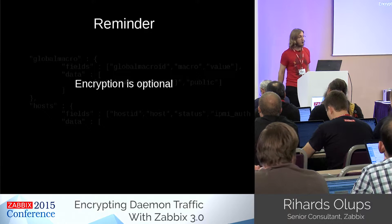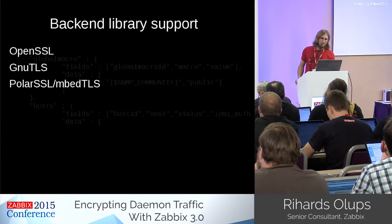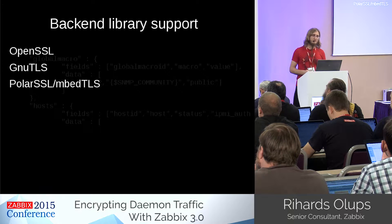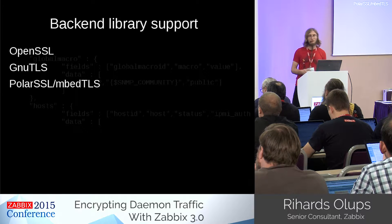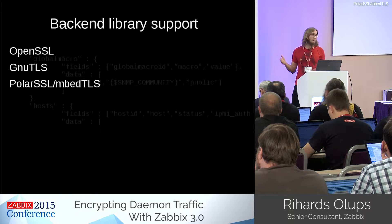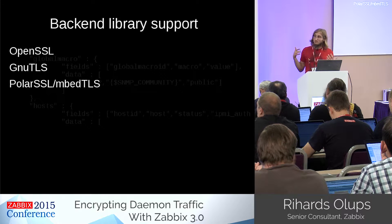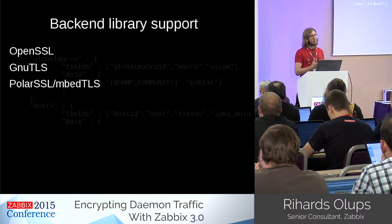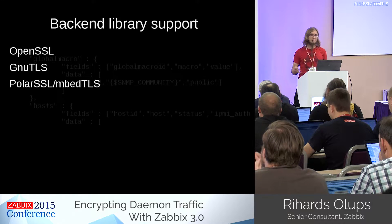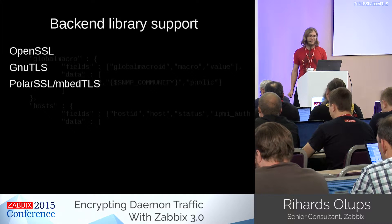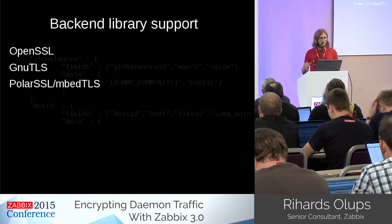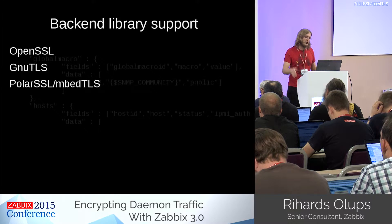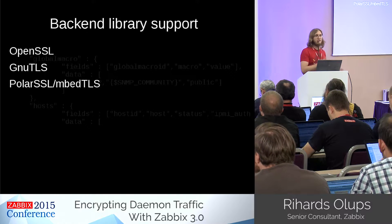Zabbix developers decided to support three different libraries: OpenSSL, GnuTLS, and what was called PolarSSL — now called mbed TLS. You choose which one to use or which one is packaged in your distribution. A significant driver for this was avoiding heavy dependence on one specific library, so that if security issues are discovered in a library, you can switch to a different one.